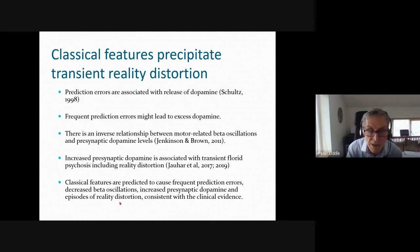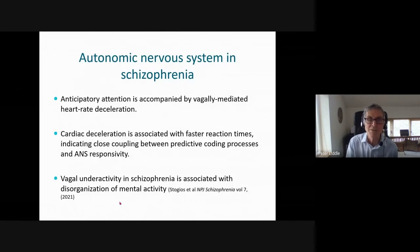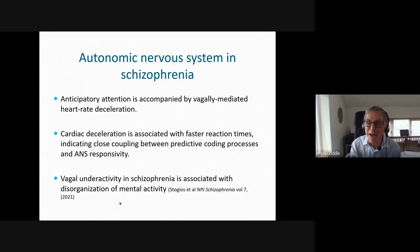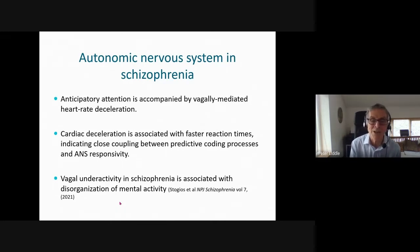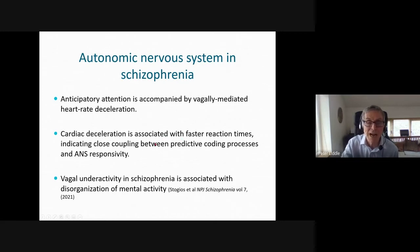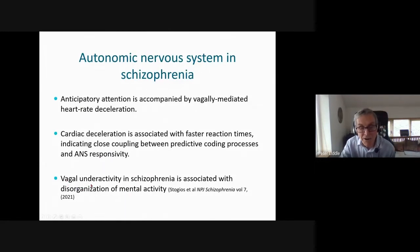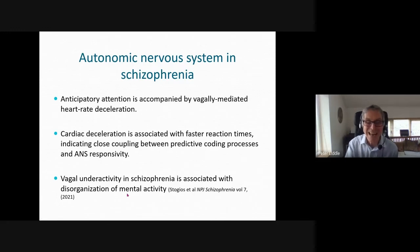Regarding the autonomic nervous system: anticipated attention is accompanied by vagally mediated heart rate deceleration — like a cat watching a mouse hole, its heart slows. Similarly, our heart slows when anticipating a relevant stimulus we must react to. Cardiac deceleration mediated by the vagus nerve — which uses acetylcholine — is associated with faster reaction times, indicating close coupling between predictive coding processes and autonomic responsivity. In schizophrenia, underactivity of the vagus is well established and associated with disorganization of mental activity.